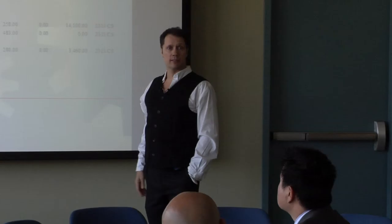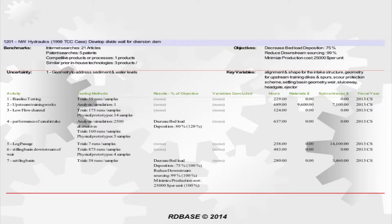Next, do we have quantifiable objectives? In this case yes: decrease bed load disposition, reduce downstream scouring, and reduce cost — with specific numbers attached. Most importantly, what are the variables we're going to experiment with that aren't provided by existing models? Things like input intake shape, geometry of dikes and spurs, settling basin geometry. The scientists made a reasonable argument that these were not predictable from existing models, and the judge agreed these were clear system uncertainties.